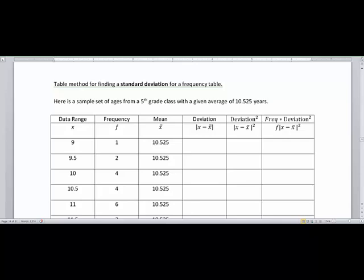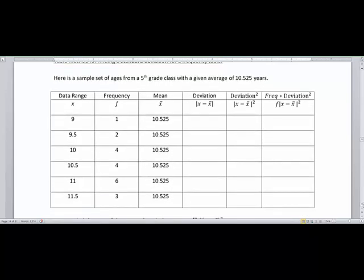Here's a sample set of ages from a fifth grade class with a given average of 10.525 or 10 and 525 thousandths of a year. A lot of this has been filled out for you already.